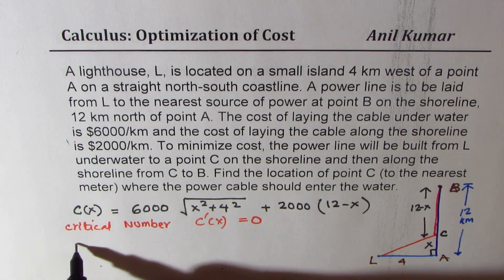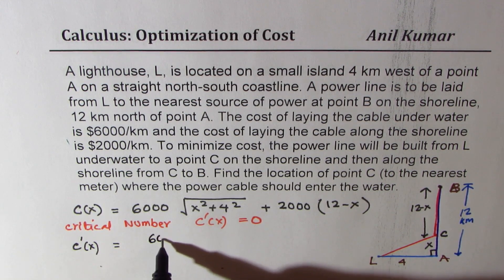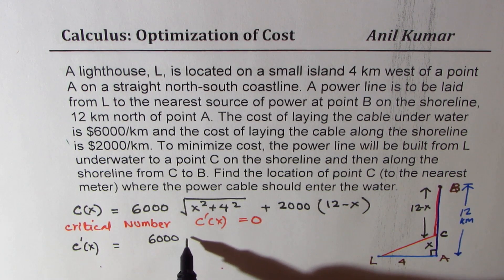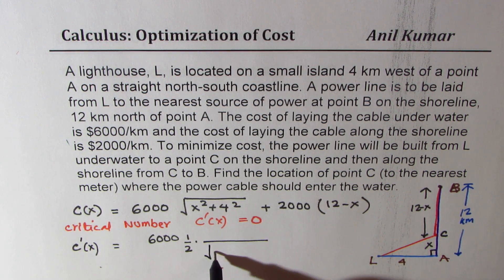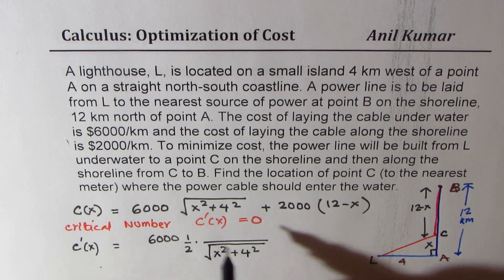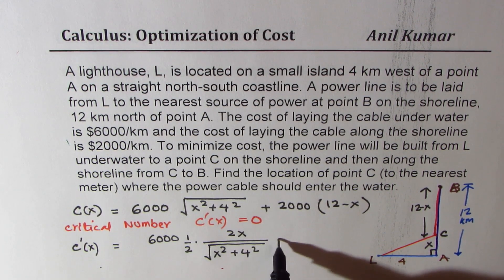The derivative of this will be 6,000 times, this comes in the denominator, square root of x square plus 4 square. Derivative of inner side function, which is 2x plus...